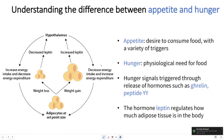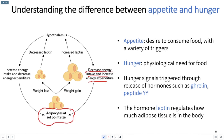Understanding the difference between appetite and hunger: there's an interplay between appetite and hunger inside our bodies. The hypothalamus of the brain sends signals that can decrease energy intake and increase energy expenditure, affecting the fat cells or adipocytes' set point. The hypothalamus can also increase energy intake and decrease energy expenditure to change the set point again. For example, if you ate a lot of food causing weight gain, the adipocytes will swell up and enlarge, secreting more leptin to cause your brain to stop eating.